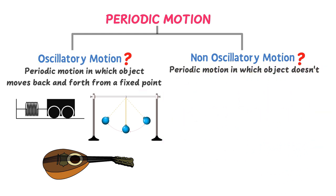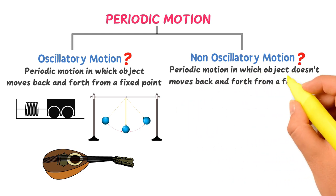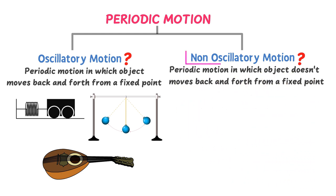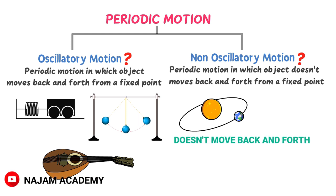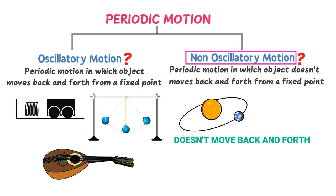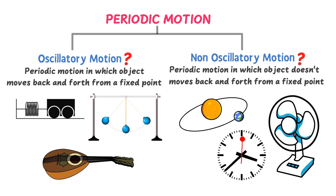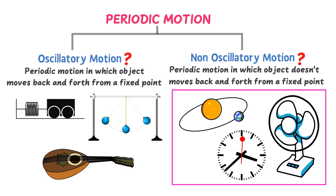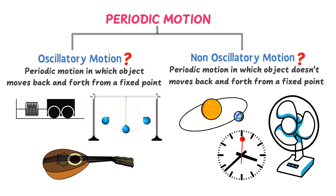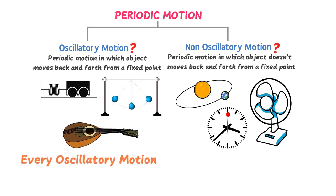Periodic motion in which an object doesn't move back and forth from a fixed point is called non-oscillatory motion. For example, the motion of the Earth around the Sun — the Earth doesn't move back and forth but repeats its motion on a circular path. Similarly, the motion of a fan and the motion of the hands of a clock all repeat their motion on a circular path, so they are all non-oscillatory motion.